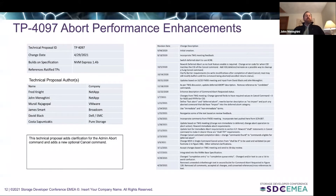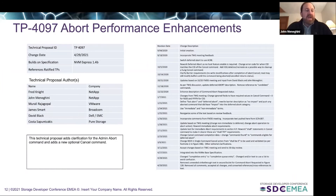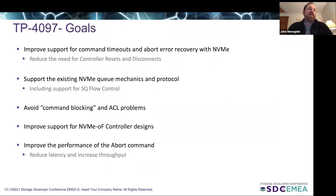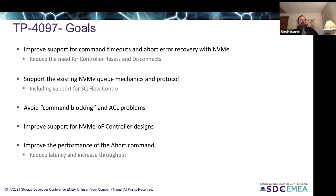TP4097 is a technical proposal that we started working on last September. The technical proposal adds clarifications to the abort command and adds a new optional cancel command. The goals of this technical proposal were to improve support for command timeouts, support the existing NVMe queue mechanics, avoid command blocking and ACL problems, and also improve support for NVMe over fabric controller designs. Overall, we wanted to improve the performance of the abort command and reduce latency and increase throughput with aborts.